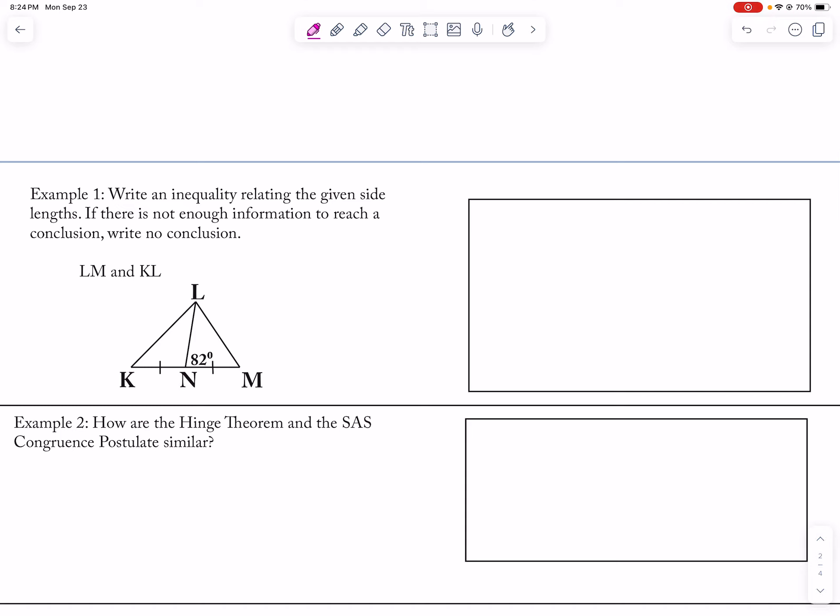So now I'm going to write an inequality relating to the given side lengths and see if there's enough information. So if I look at this, LM, so this is 82, and then I want to see KL. So 180 minus 82 is 98. So then KL is going to be bigger than LM.